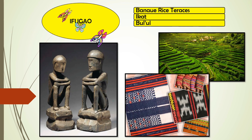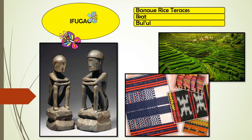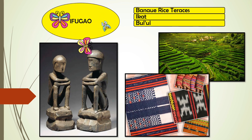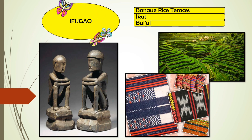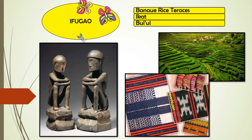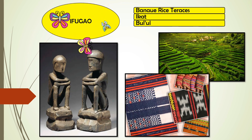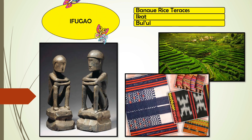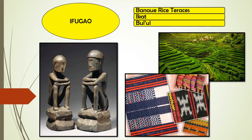Ifugao was named from the term Ipugo. 'I' means from or people, and 'Pugo' means hill. Thus, Ifugao means people of the hill. The Banaue Rice Terraces is the famous heritage in Ifugao. Ikat is the Ifugao woven loincloth, which means to bind together. Bulol is the Ifugao sculpture of the rice god of the Banaue Rice Terraces.